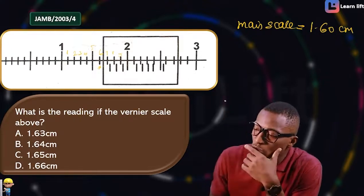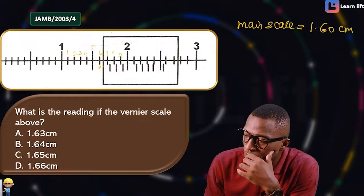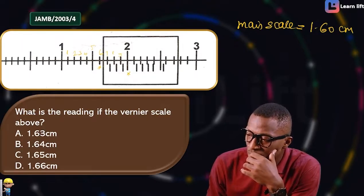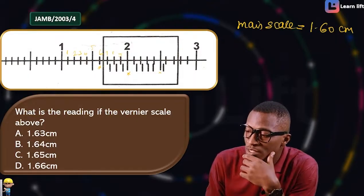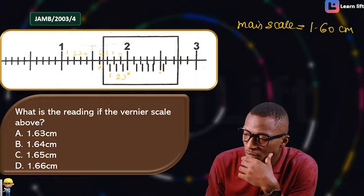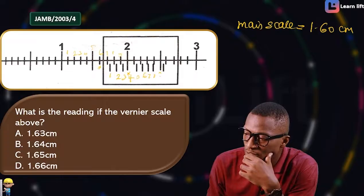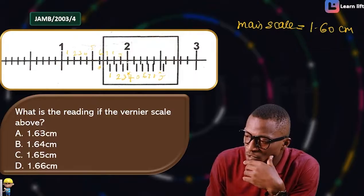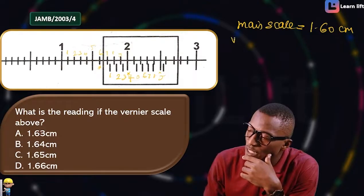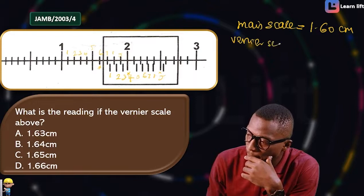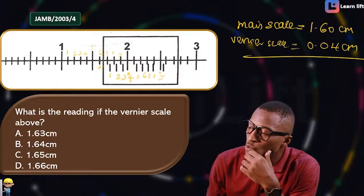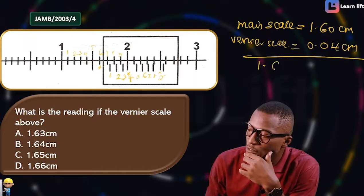Now let's find where the main scale and vernier scale meet. Looking carefully — they touch here. Counting along the vernier scale: 1, 2, 3, 4, 5, 6, 7, 8, 9. If 9 doesn't appear in the options, then they're referring to the 4th division. So the vernier scale reading is 0.04 cm. Adding together: 1.60 + 0.04 = 1.64 cm.